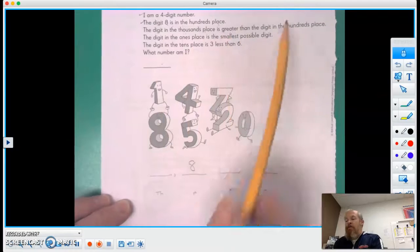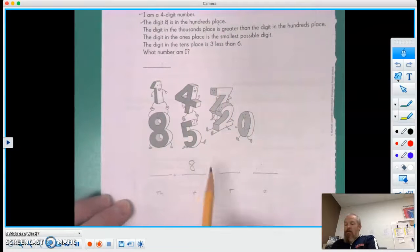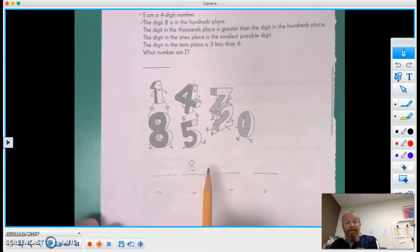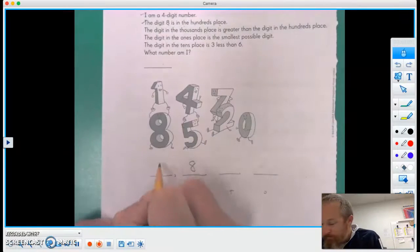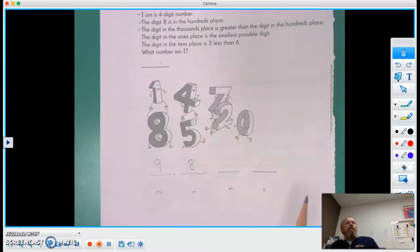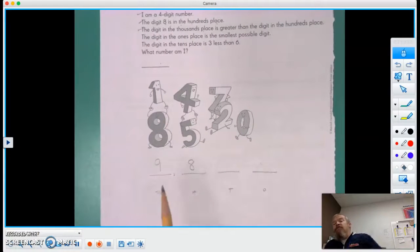The digit in the thousands place is greater than the digit in the hundreds place. Okay, so in the thousands place, it has to be bigger than an eight. There's only one digit that is bigger than an eight, and that is the digit nine. Very good. Now, 10, someone said 10. 10 is two digits, a one and a zero. So really it has to be only a nine because it's only a four digit number.